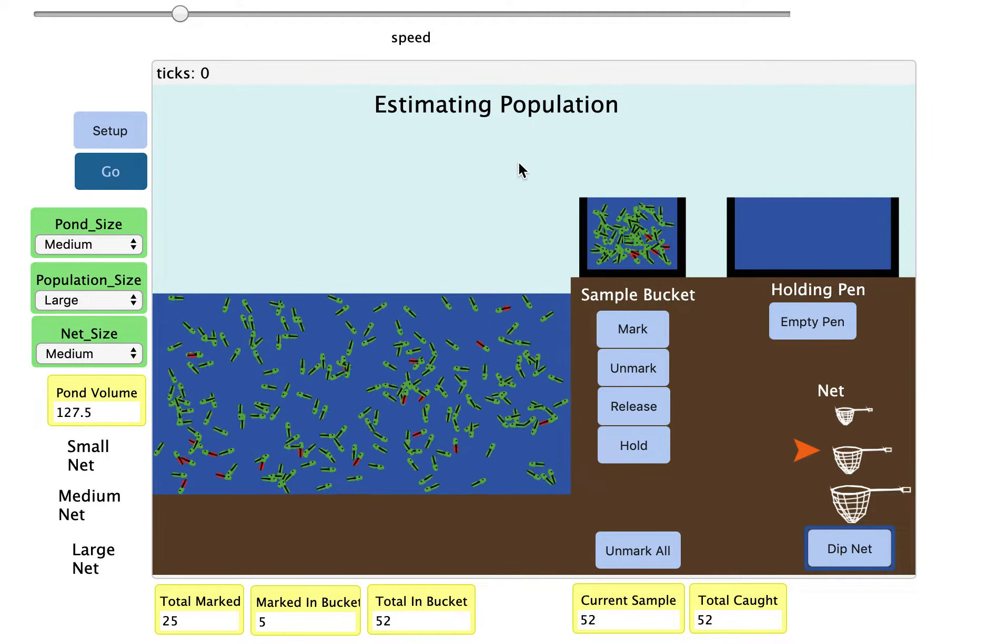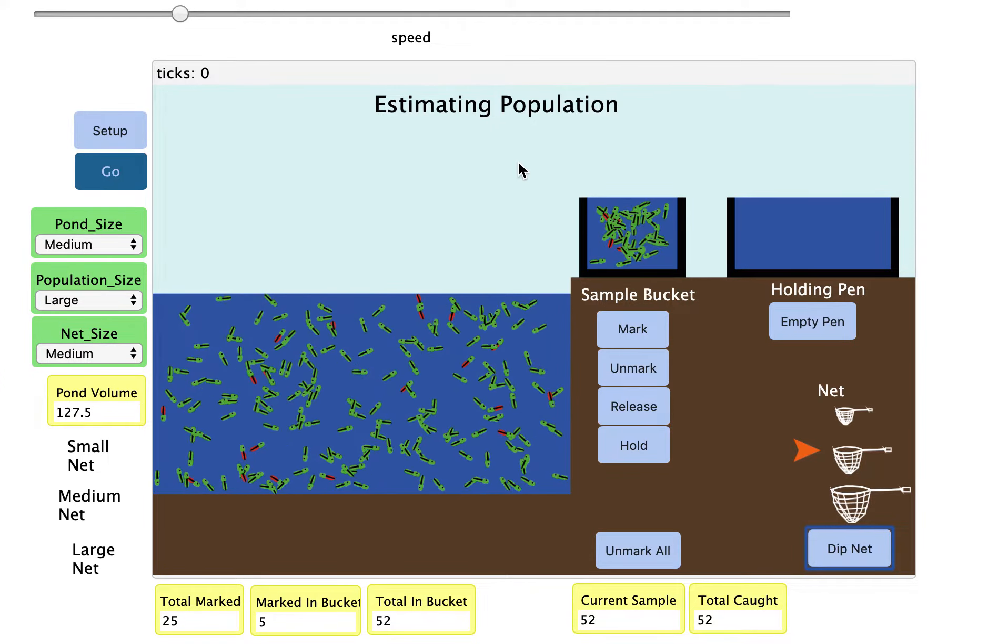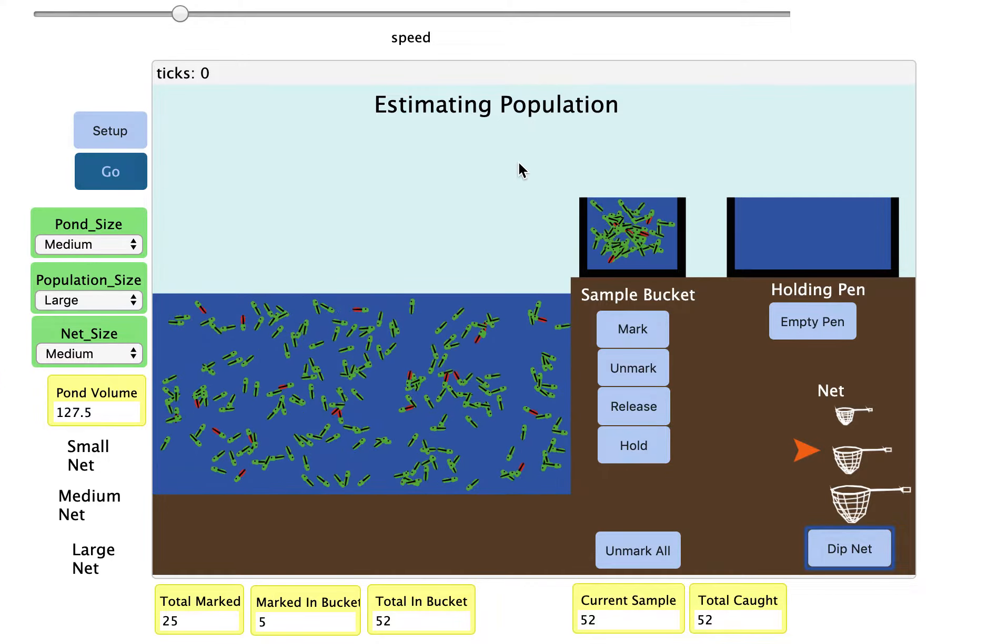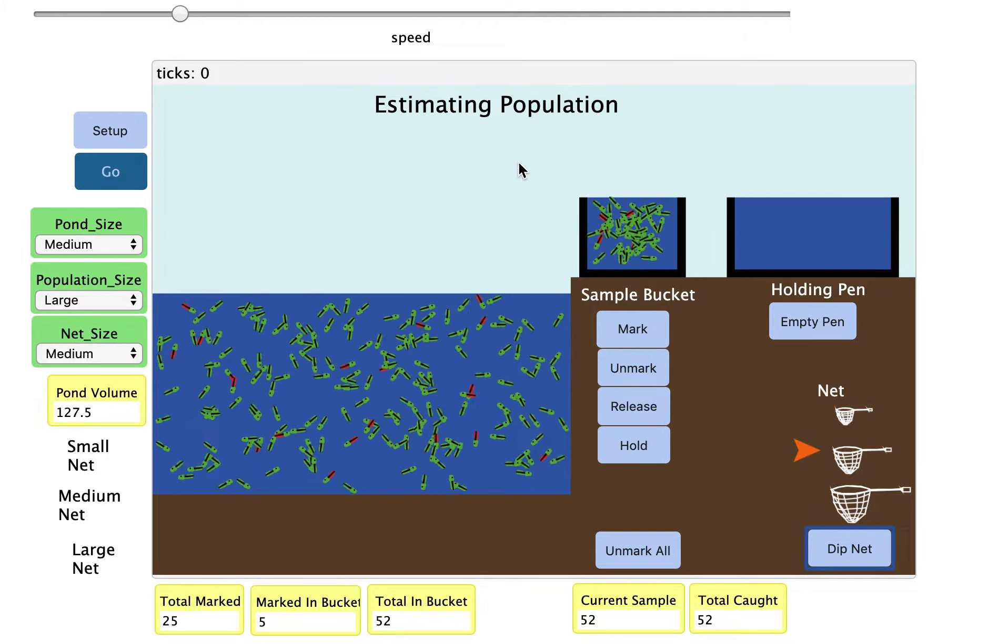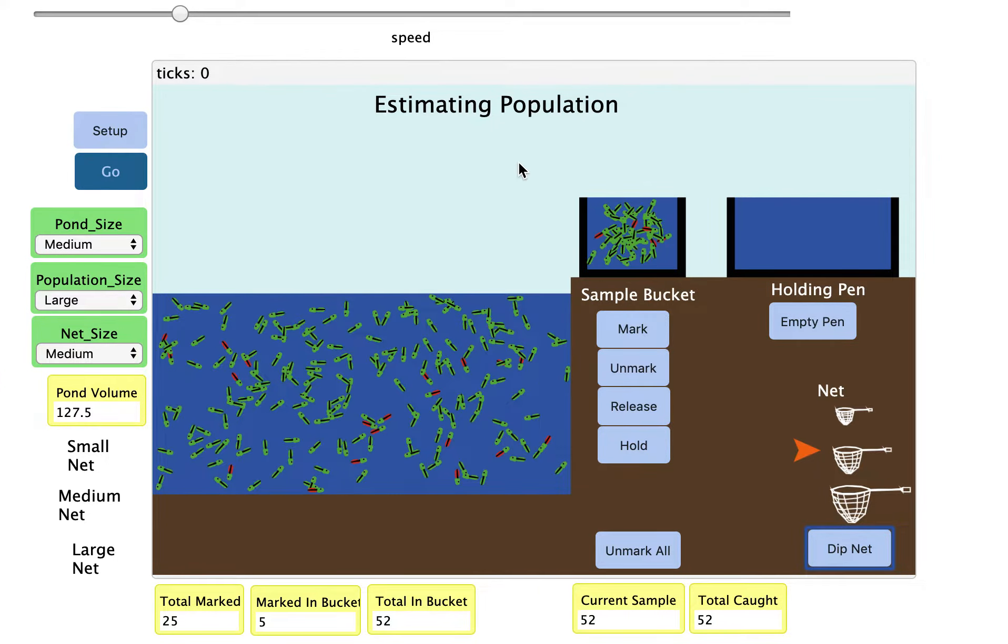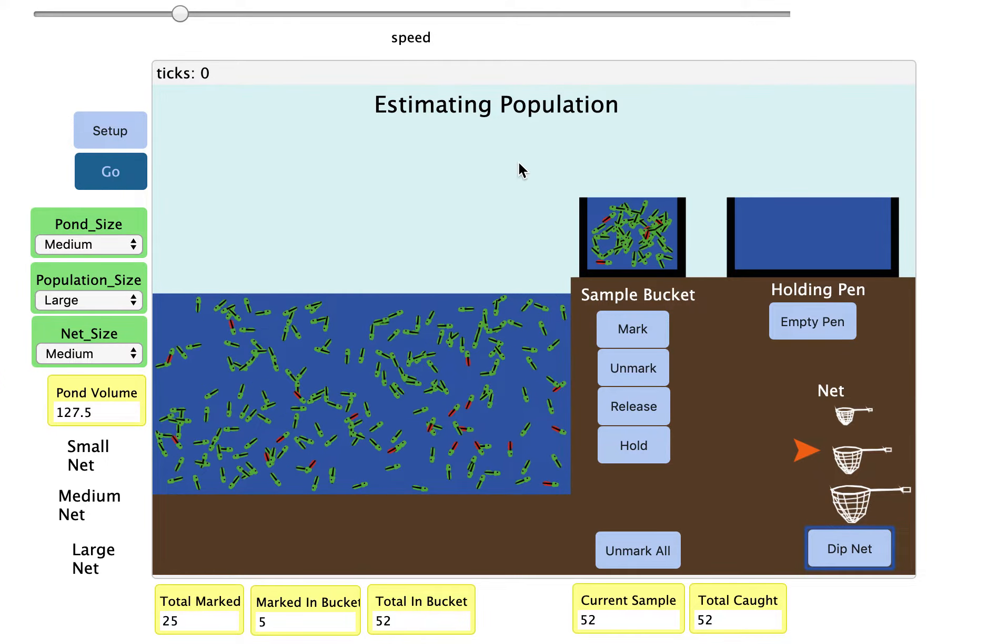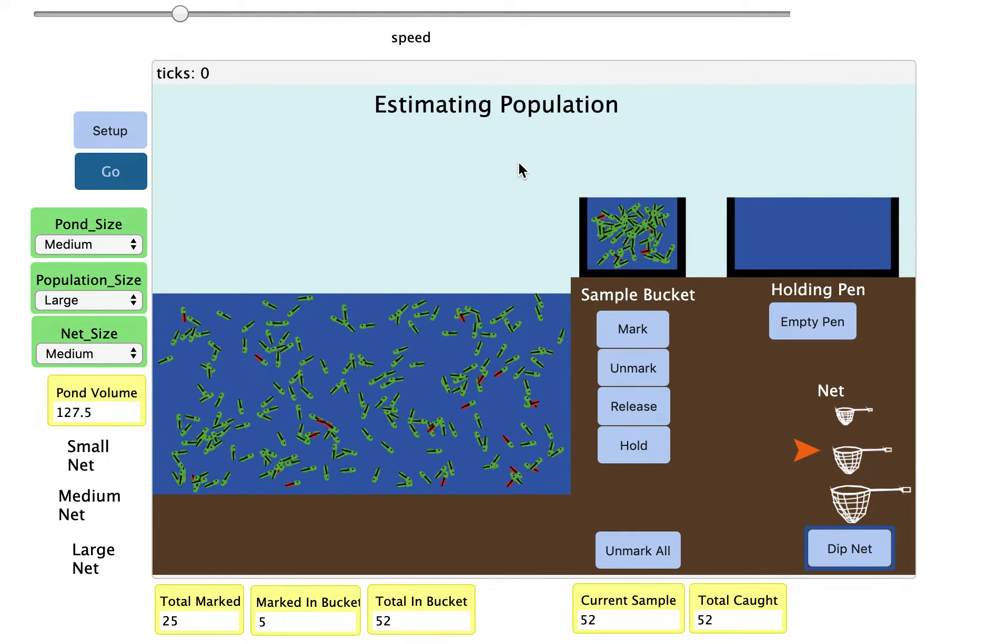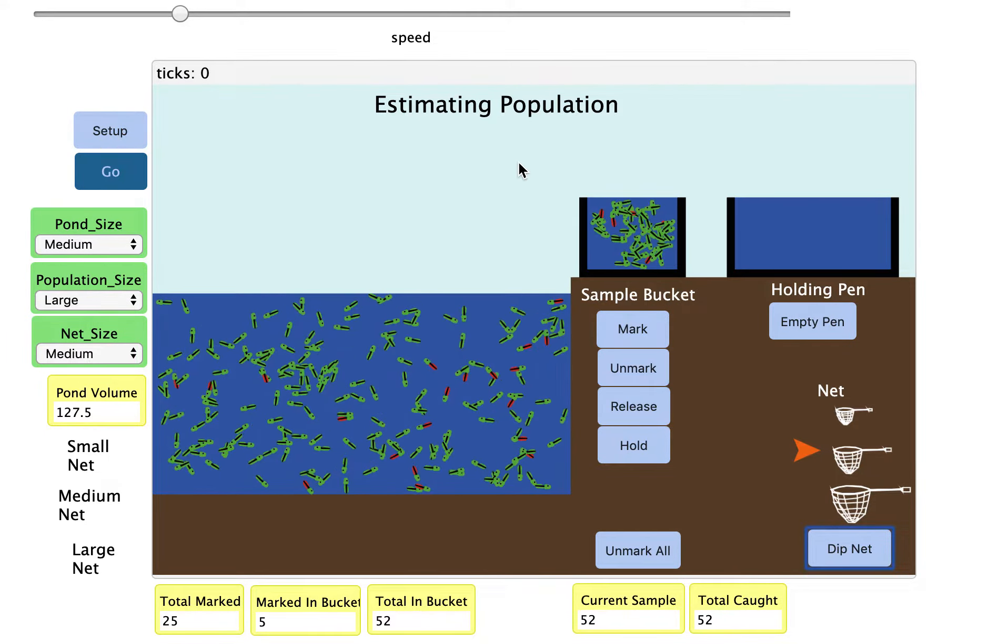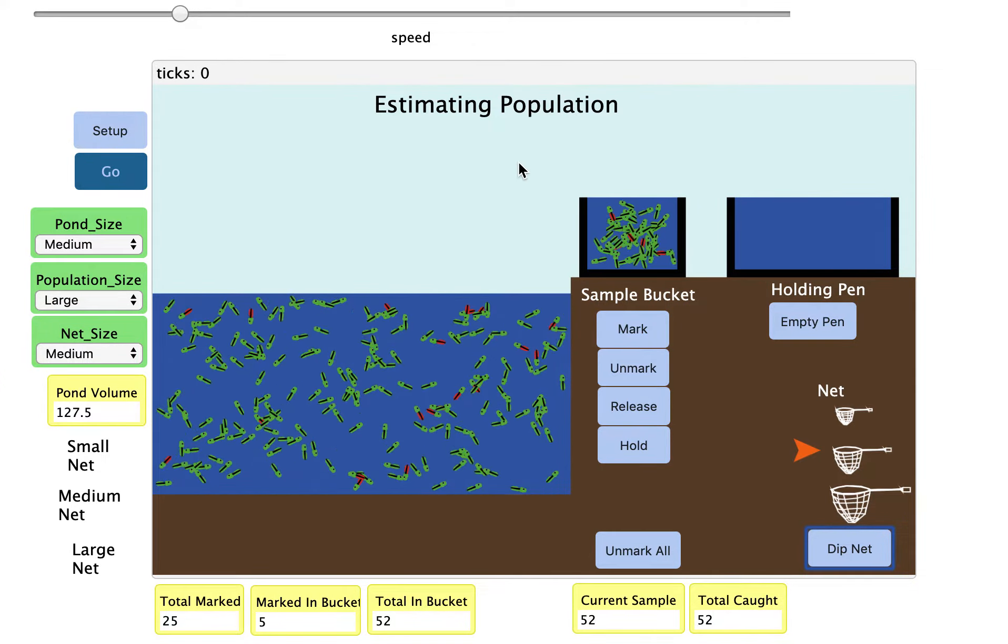As mathematicians, we have to be aware of our sample sizes. What we're going to discuss next week is how sample size affects our ability to estimate a population. We want to capture different sample sizes and then analyze that data as a class next week, looking at trends for how sample size affects our ability to accurately estimate how many fish are in that tank. Do you have any gut feelings about sample size and how it might help us?